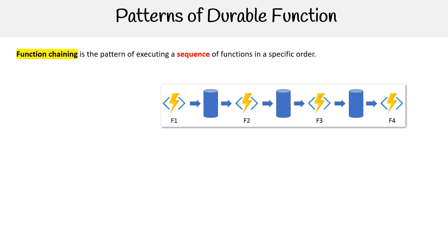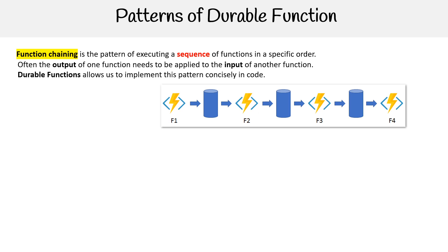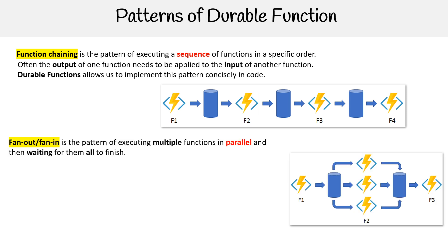If we are going to be having stateful functions, we are going to need a variety of different patterns for setting up different kinds of serverless workloads. Let's take a look at them. The first is function chaining — this is the pattern of executing a sequence of functions in a specific order. Often the output of one function needs to be applied to the input for another function. Durable functions allow us to implement this pattern concisely in code.